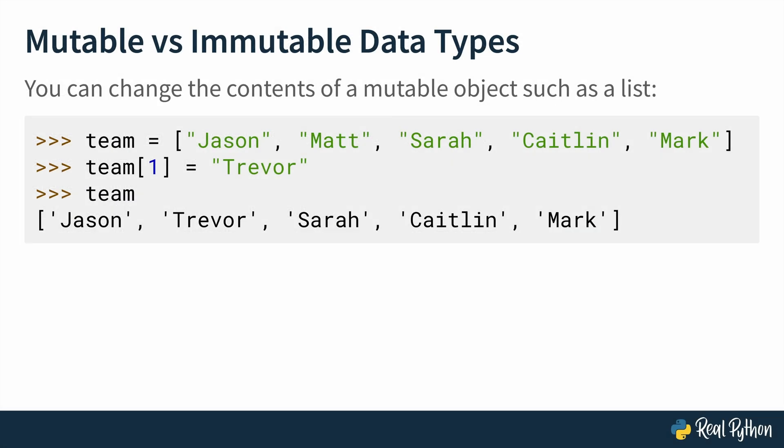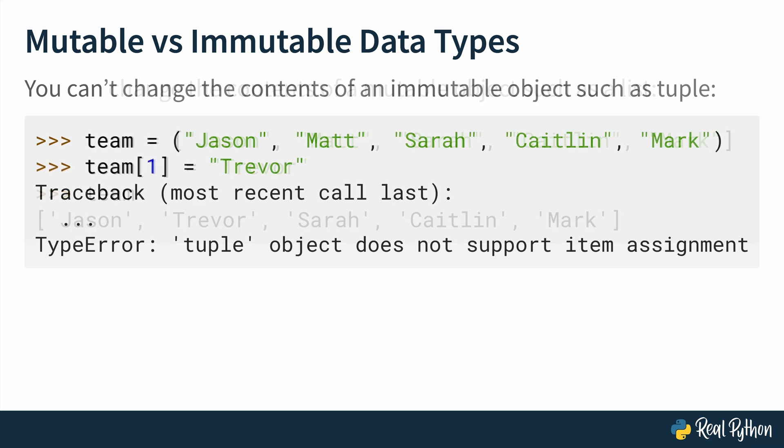Here's a quick summary of this lesson. You can change the contents of a mutable object, such as a list — in this case, there's a team and we're replacing Matt with Trevor. However, you can't make changes to the contents of an immutable object, such as a tuple. In this case, you try to remove Matt and replace him with Trevor and you get a TypeError.